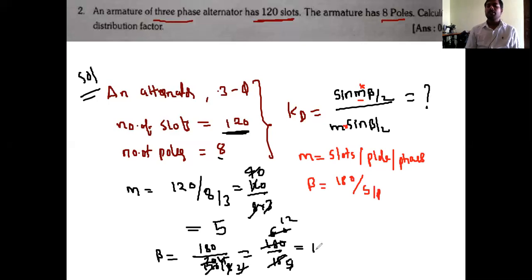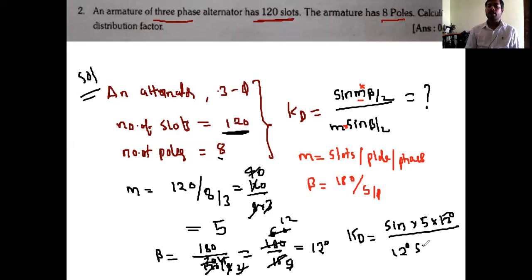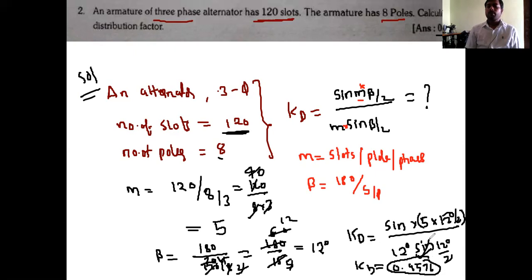Beta equals 12 degrees. Substituting the data, kd equals sin(m·beta/2) divided by m·sin(beta/2) — that is sin(5 × 12/2) divided by 5·sin(12/2). After solving, you will get exactly 0.9576. If you calculate with a calculator, you will definitely get approximately 0.9 something.